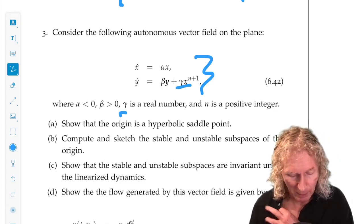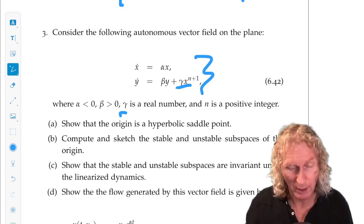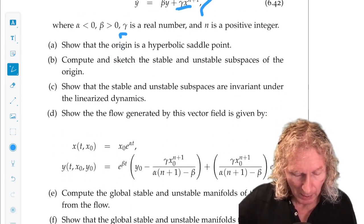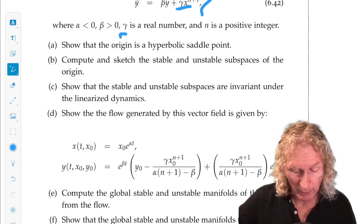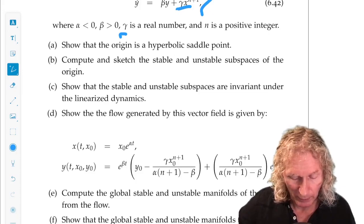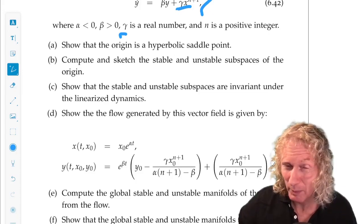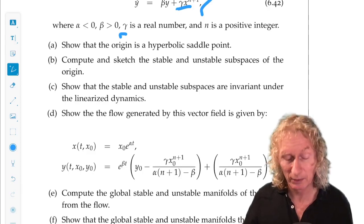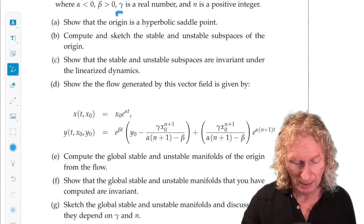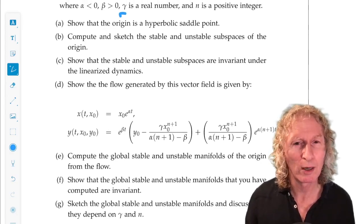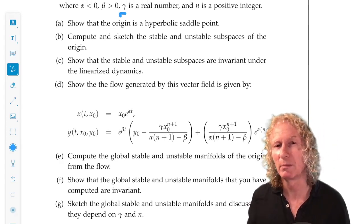Alright, and then I want you to show that the origin is a hyperbolic saddle point. Fine. Compute and sketch the stable and unstable subspaces of the origin. Show that the stable and unstable subspaces are invariant under the linearized dynamics. You've got all the tools to do that. I don't think I've quite posed it in those words, but pretty close.